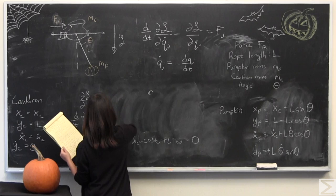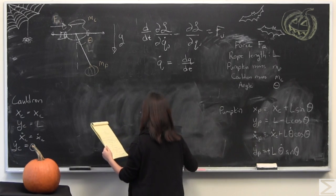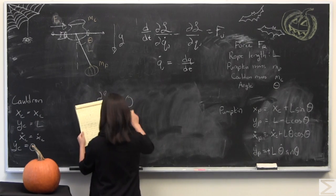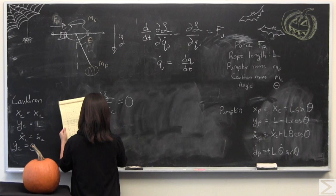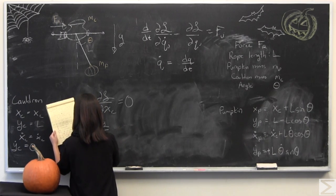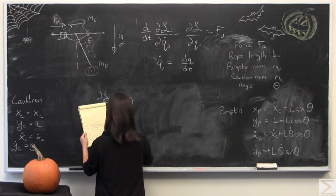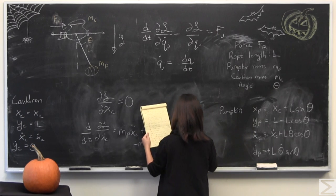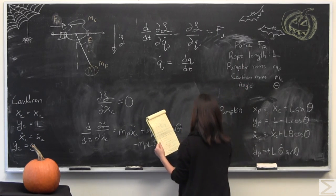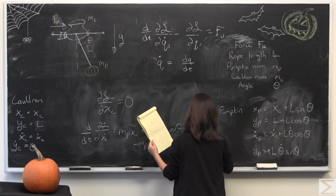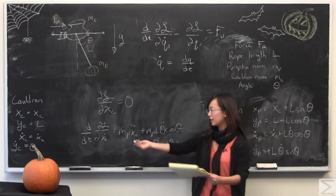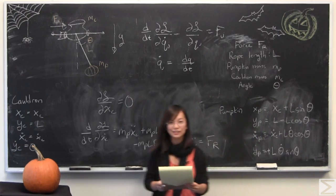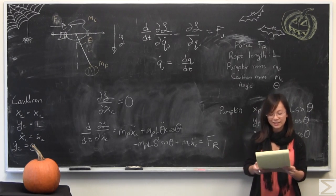This one is much faster. It is faster because del L with respect to del xc, well, there is no dependence on this, so it is equal to zero. I am going to take the total time derivative with respect to xc. We do have to set this equal to the force of the rocket because that is how the Lagrangian equations of motion work. You subtracted zero from here, so that gives you the answer. This is the second Lagrangian equation of motion.